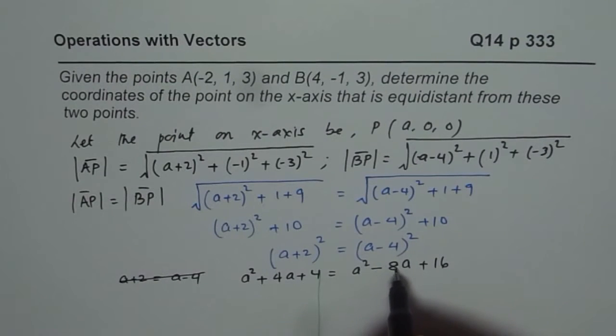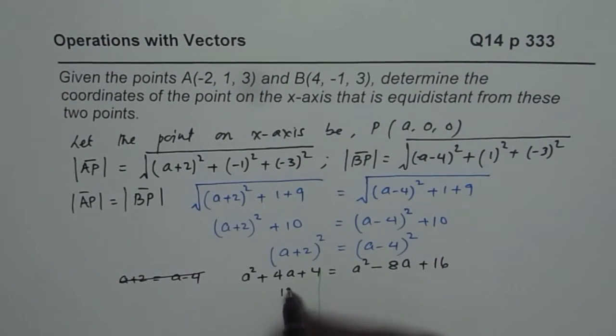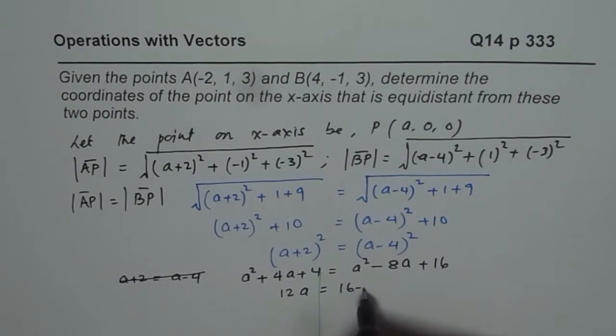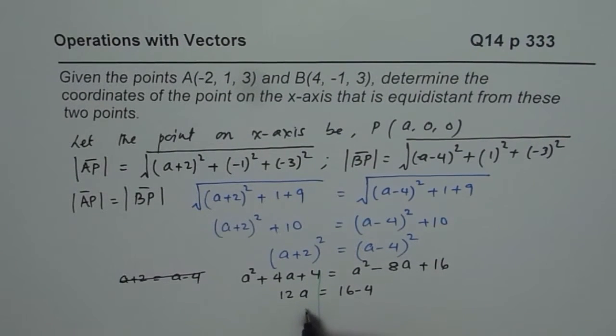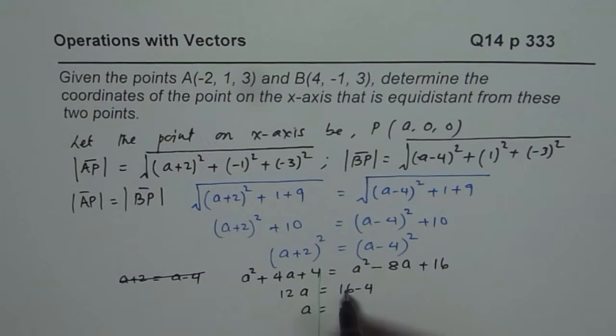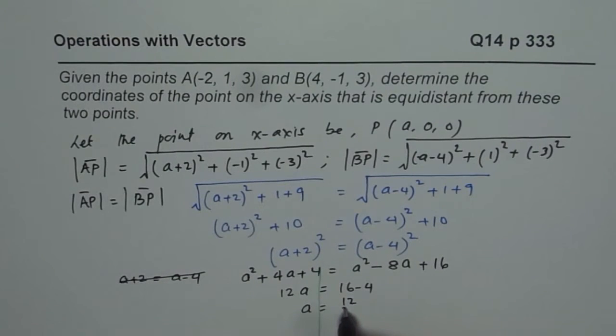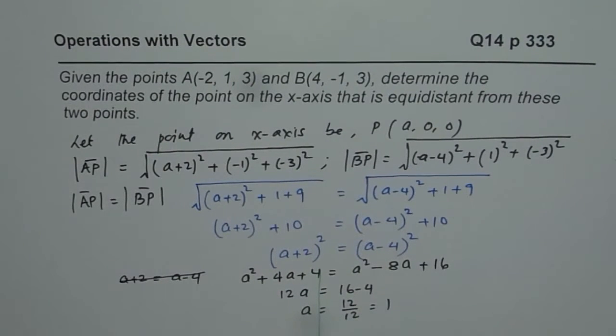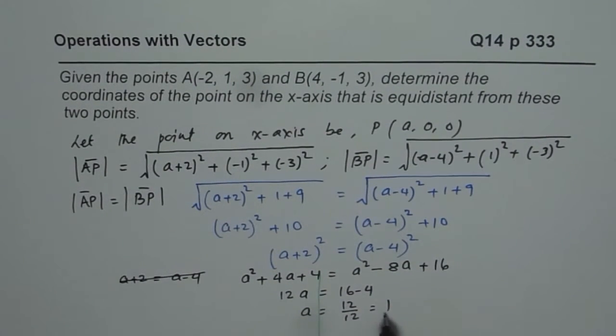We can combine these. We will bring this to the left side, so we get 12a equals to 16 minus 4. And so, a equals to 12 over 12, which equals to 1. So a equals to 1 is our solution.